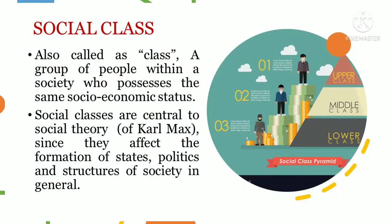Social class, sometimes referred to as just class, is a group of people within a society who possess the same socio-economic status. Social classes are central to the social theory of Karl Marx, since they affect the formation of states, politics, and structures of society in general. Social class subdivides people into different groups: the upper, middle, and lower class.